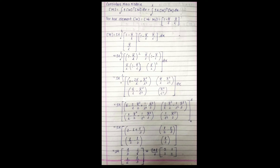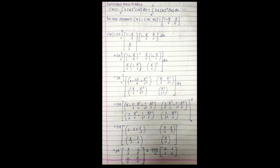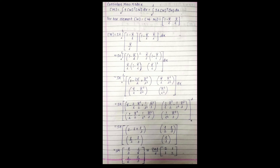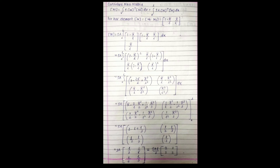Multiplying out the matrix: first row, first column gives (1 − x̄/L)²; first row, second column gives (x̄/L)(1 − x̄/L); second row, second column gives (x̄/L)². Expanding each term: (1 − 2x̄/L + x̄²/L²), (x̄/L − x̄²/L²), (x̄/L − x̄²/L²), and (x̄²/L²).